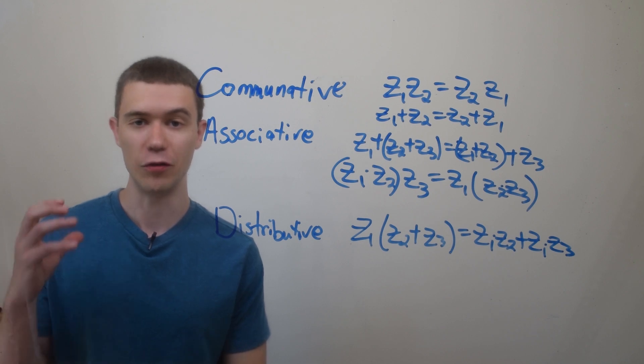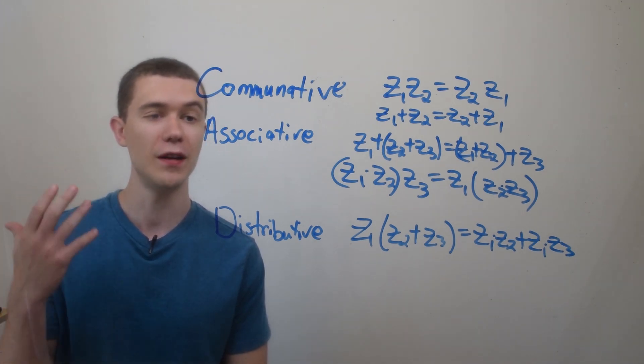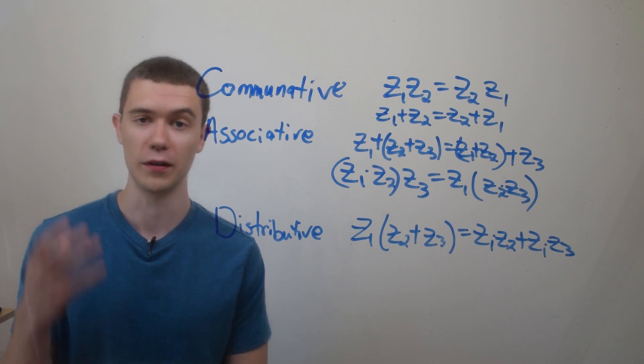So before I can really get into the nitty gritty of it, we have to talk about these three things: the commutativity, associativity, and the distributive laws of complex numbers.